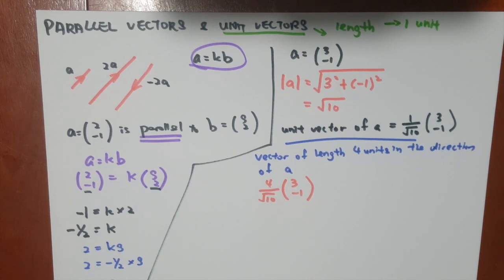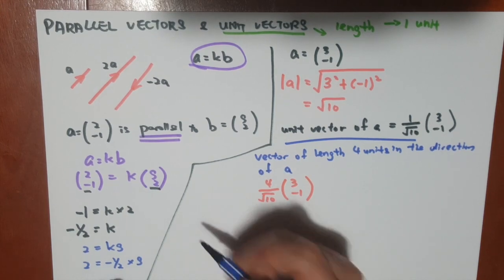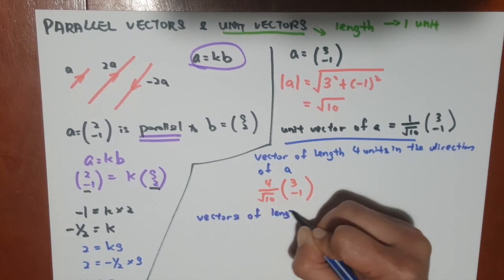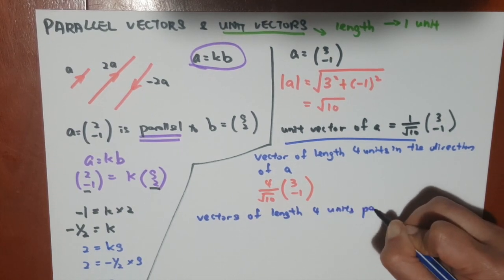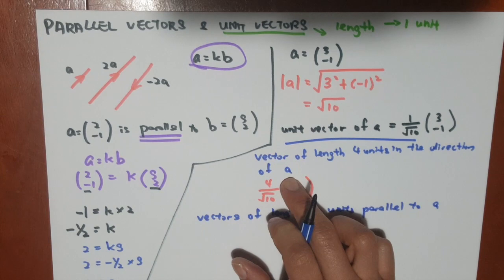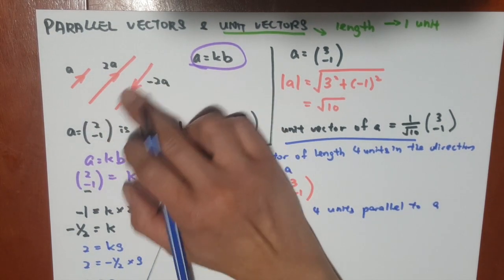Does that make sense? So if we want to find vectors of length 4 units, which are parallel to a, it means that if I need to find vectors of length 4 units, parallel to a, you can see that these two questions are different, because this is in the same direction of a. Parallel could mean it's in the same direction, or it's opposite in direction.